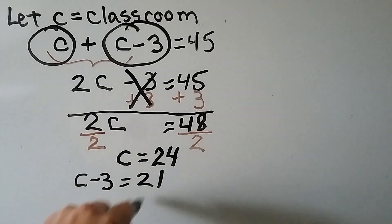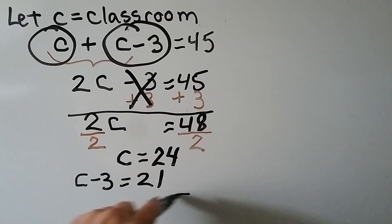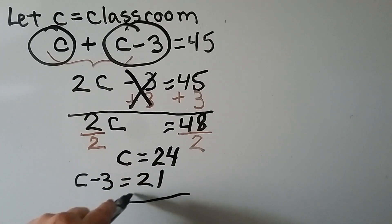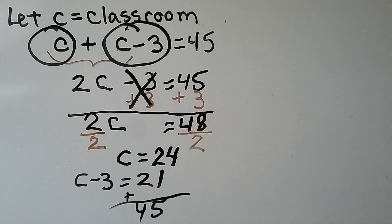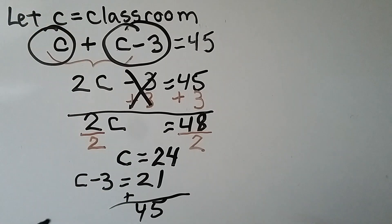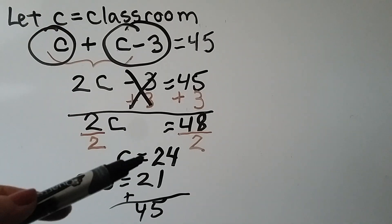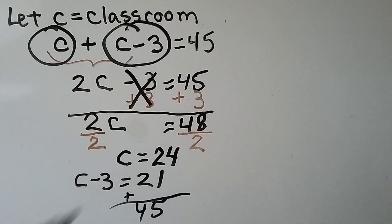If we add these together, we get 45. So we know one classroom has 24 and the other one has 21. Let's try one with multiplication.